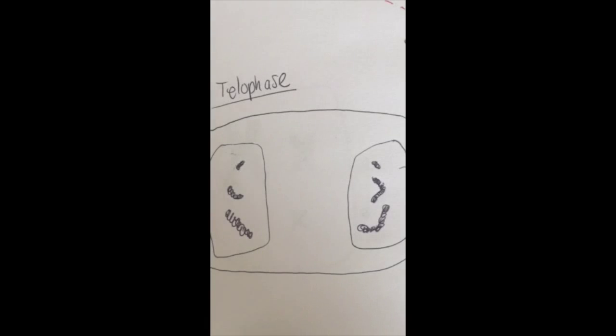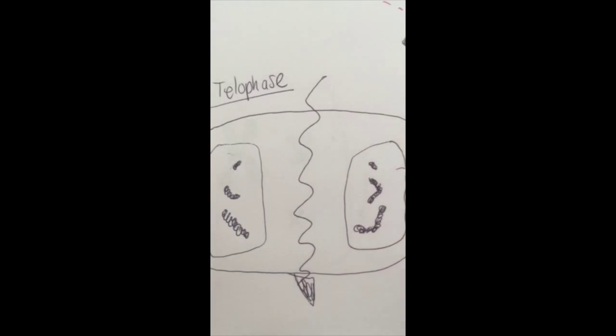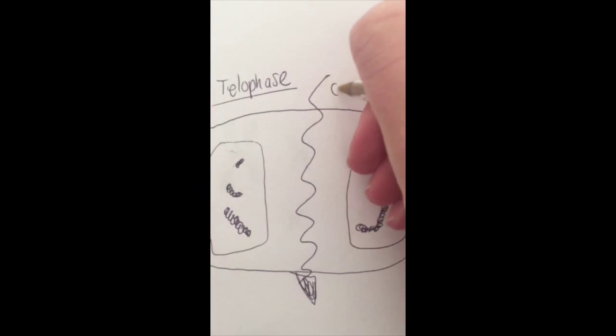And we move into our final stage of cell division, which is cytokinesis, where the cytoplasm splits. Sometimes you say it's cleaved. And that creates two identical cells.